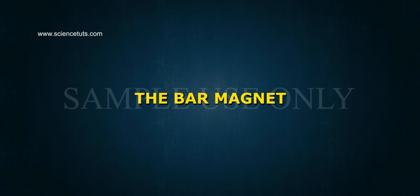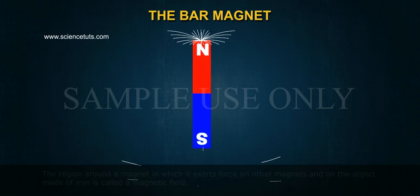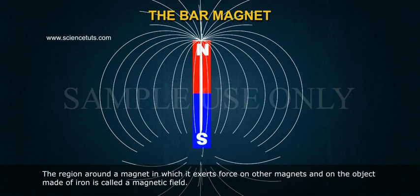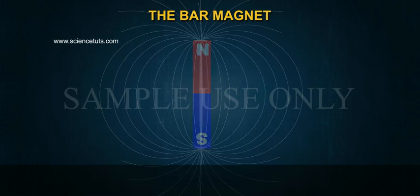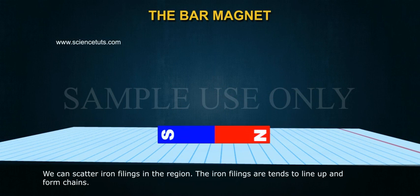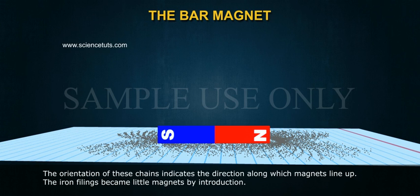The bar magnet has two poles: north pole and south pole. The region around the magnet in which it exerts force on other magnets and on objects made of iron is called a magnetic field. We can scatter iron filings in the region; the iron filings tend to line up and form chains. The orientation of these chains indicates the direction along which magnets line up. The iron filings became little magnets by induction.